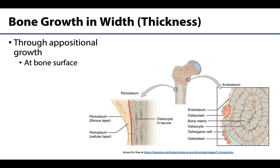This process will continue as long as the initiating signals persist. For example, considerable weight-bearing exercise in a certain area could initiate osteoblasts to secrete organic material. It is also important to note that as these processes occur on the outer surface, osteoclasts on the inner surface around the endosteum will break down bone in that region to maintain proper amounts of compact bone and an appropriately sized medullary cavity.